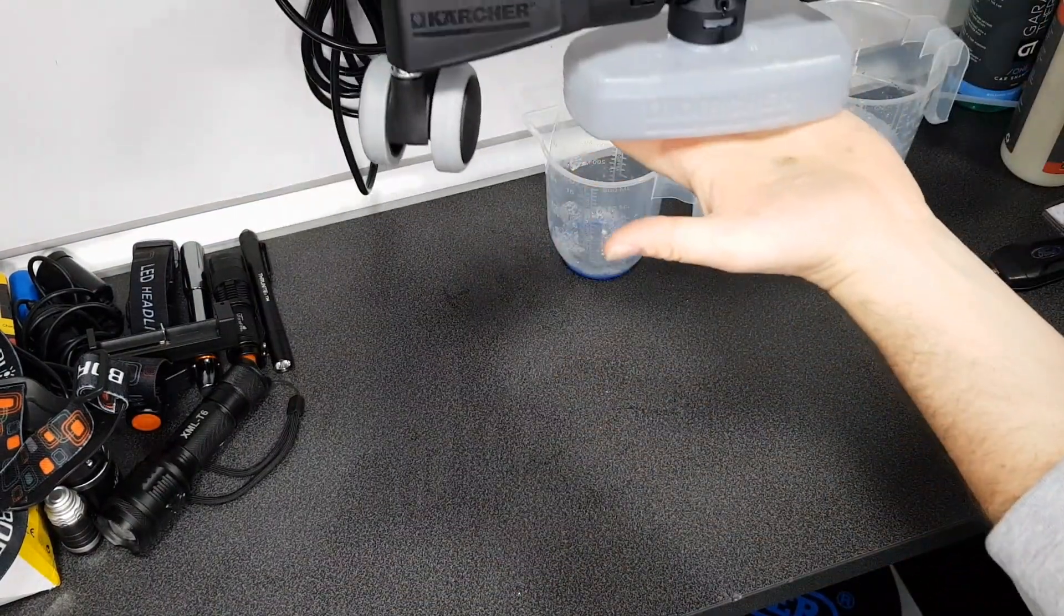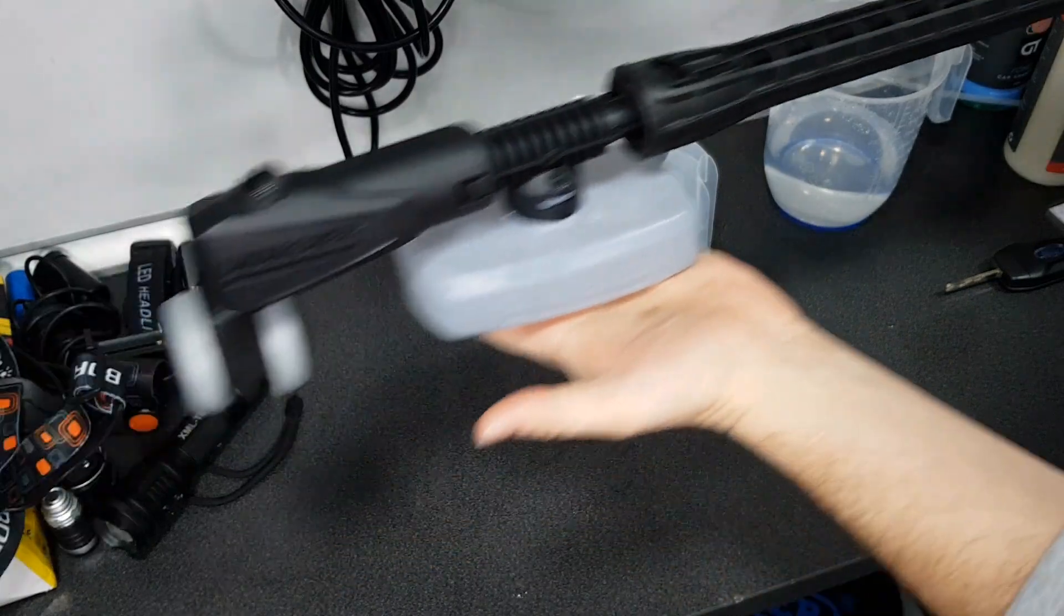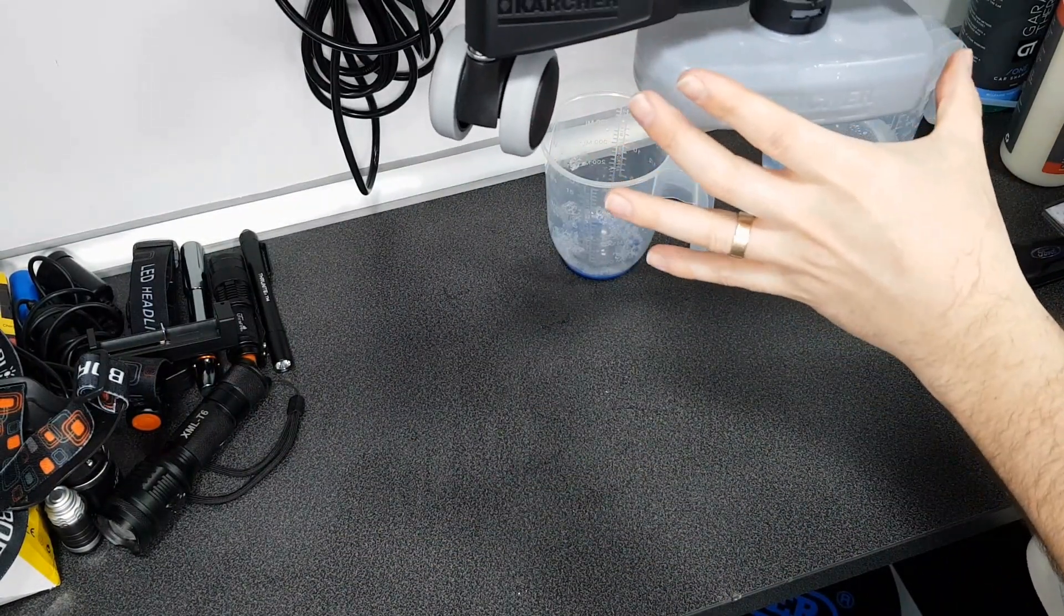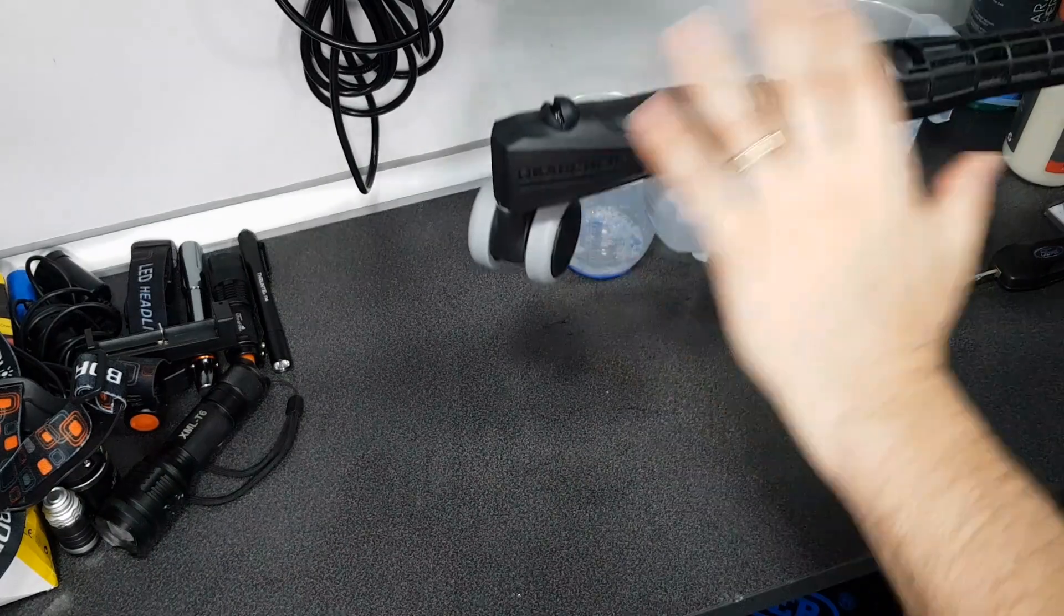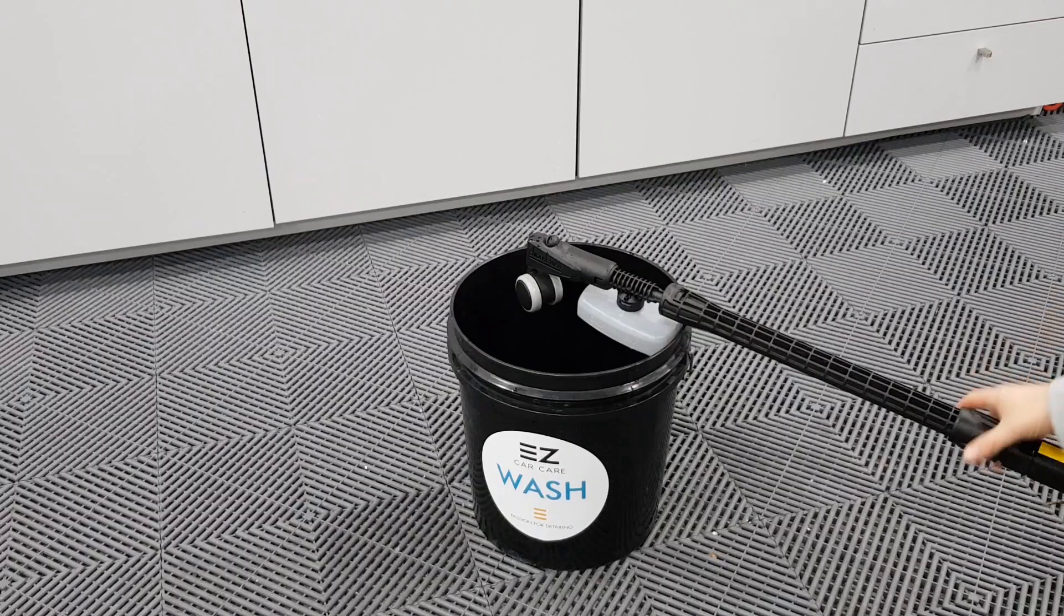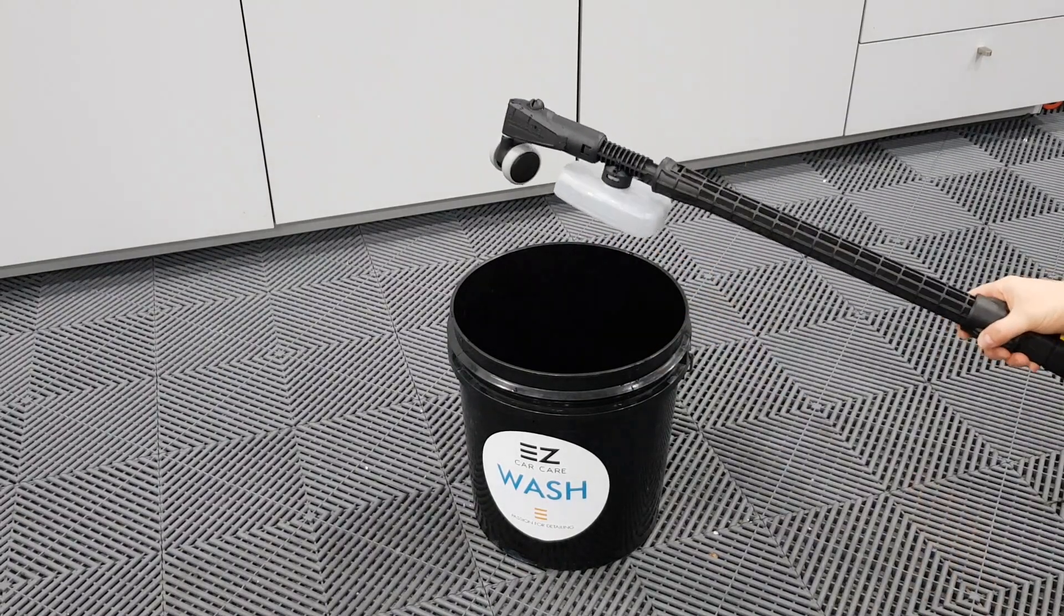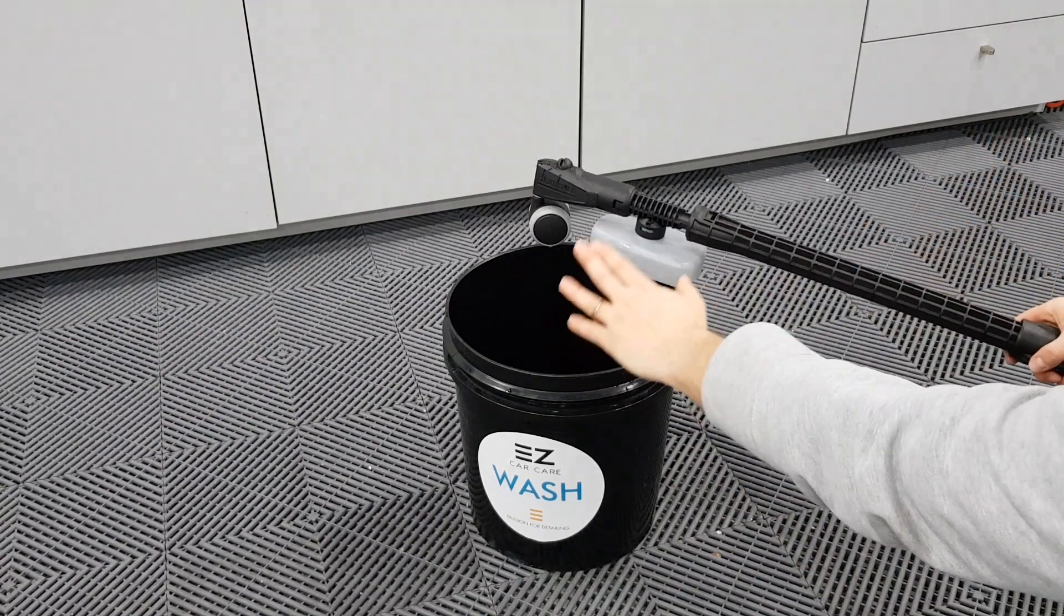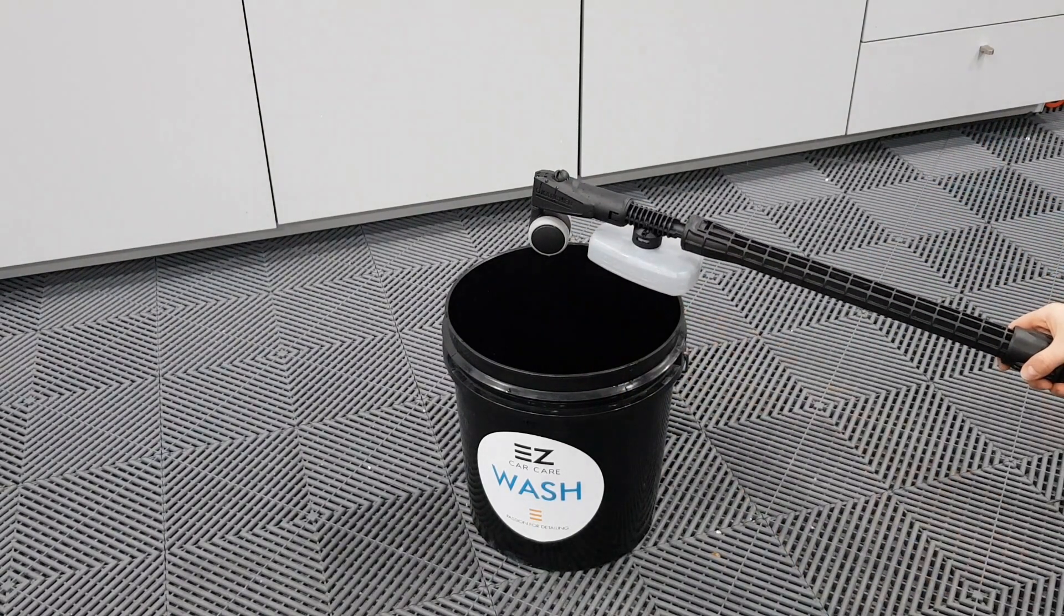And now what we're going to do is attach this to the pressure washer and dispense all of this liquid out of here. So we'll keep dispensing until all of this liquid is gone and we'll dispense this into a bucket so we can measure what we've dispensed. So I've got my lance, got the tank full of water, got my bucket, and now I'm just going to dispense all of this until this is gone into this bucket.